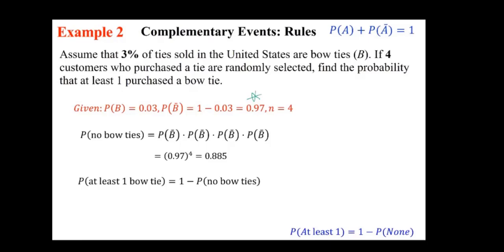0.885. Which means 1 minus that is 0.885, or if you didn't write that intermediate step, 1 minus P(no bow ties) would be 1 minus 0.97 to the power 4. We already have calculated that as 0.885, so 1 minus 0.885, and the answer is 0.115. So if four customers who purchase the tie are randomly selected, what is the probability of at least one purchasing a bow tie is 0.115.